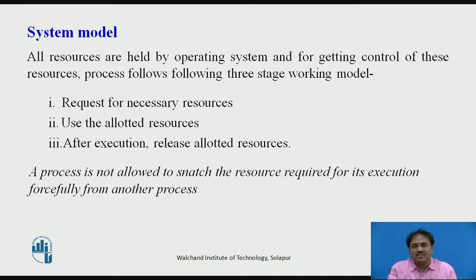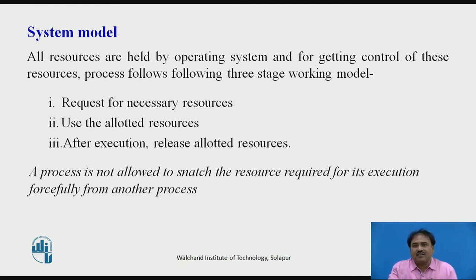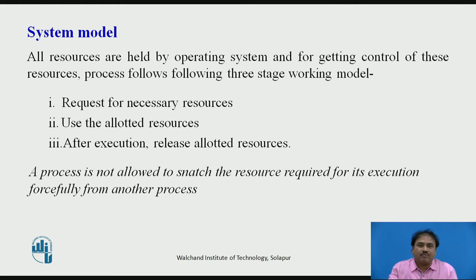Normally, all processes when they go for execution in the CPU follow one system model. For example, when one process requires some resource and is created for execution, he first requests the resource from the operating system. The operating system gives control of this resource to the process if it is available. If it is not available, the process has to wait. Once the process gets the required resource, it will use that resource for execution, and after completing, it will give back control of that resource to the operating system.